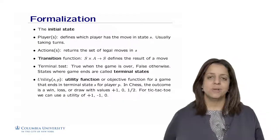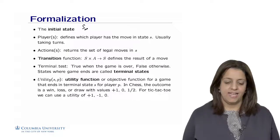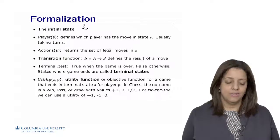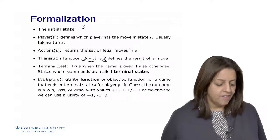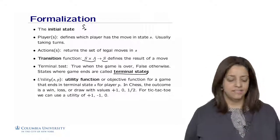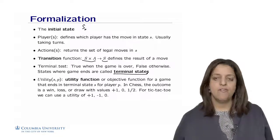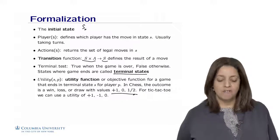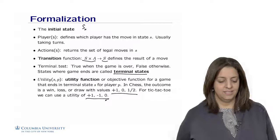We can formulate the problem as follows. We start with an initial state s_0. Player(s) defines which player moves in state s. Actions(s) returns the set of legal moves in s. We define a transition function from s cross a to s, defining the result of a move. We define a terminal test, true when the game is over. States where the game ends are terminal states. We define a utility function utility(s,p) for game ending in terminal state s for player p. In chess, outcomes are win, loss, or draw with values +1, 0, or 1/2. For tic-tac-toe, utility is +1, -1, or 0 for win, loss, or draw, respectively.